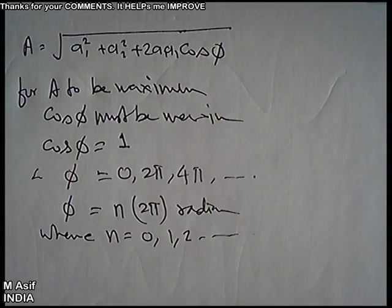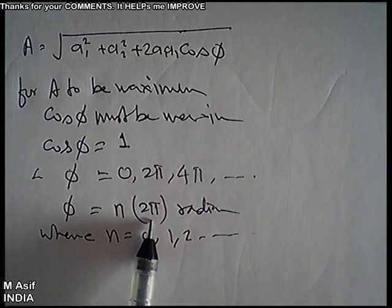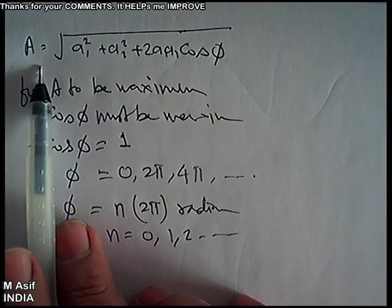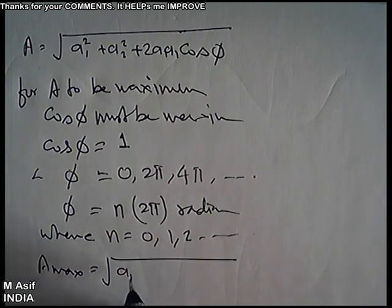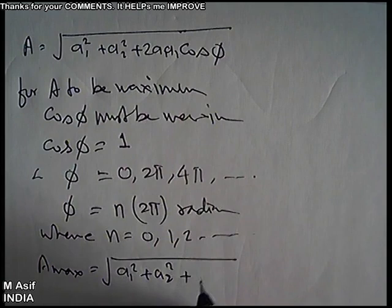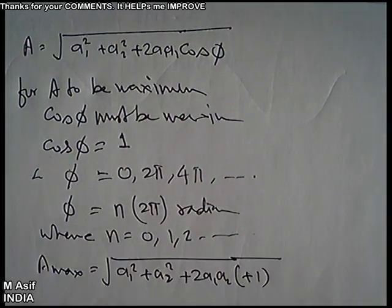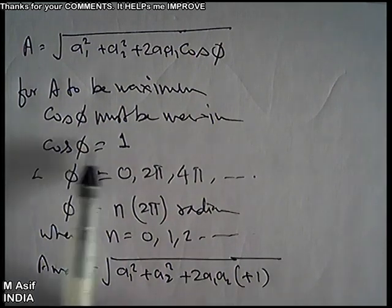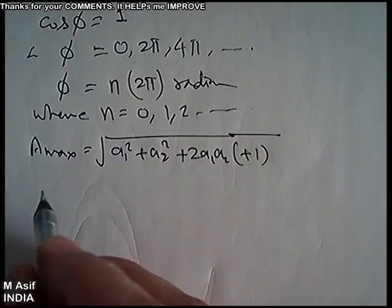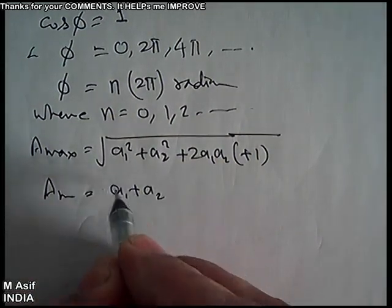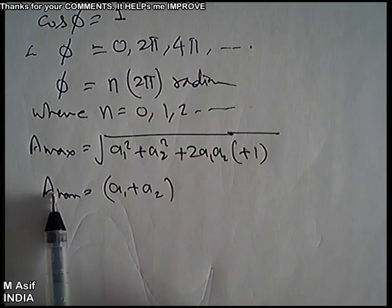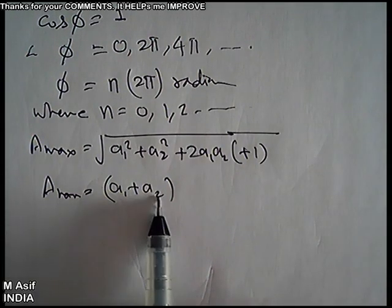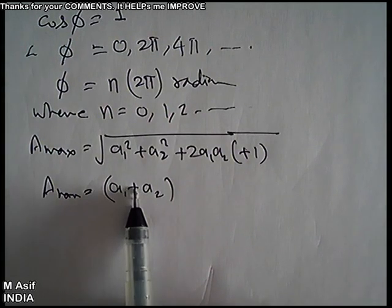Now, what will be the maximum amplitude? Once you decide that cosφ equals 1, the formula gives A maximum equals the square root of a1 squared plus a2 squared plus 2·a1·a2 into 1, which equals the square root of (a1 + a2) squared, which is simply a1 plus a2.